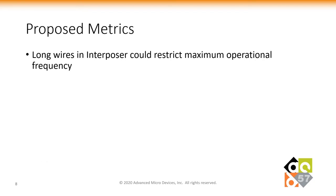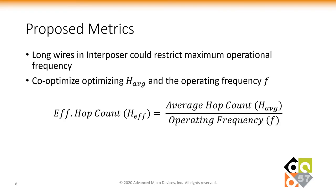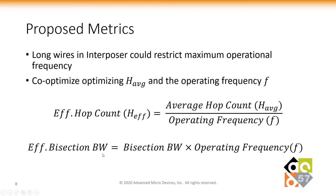Long wires within the interposer could restrict the maximum operational frequency, and a low average hop count does not necessarily translate to lower latency. Thus, there is a need to co-optimize the average hop count and maximum operable frequency while designing a network on interposer topology. To that end, we introduce an effective hop count metric which accounts for technology-level restrictions by considering the maximum operable frequency. Similarly, we calculate the effective bisection bandwidth of any topology by multiplying it with the maximum operable frequency.